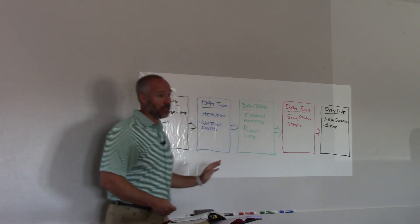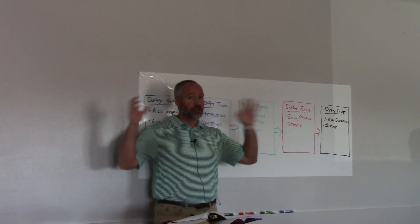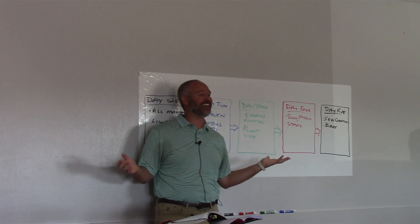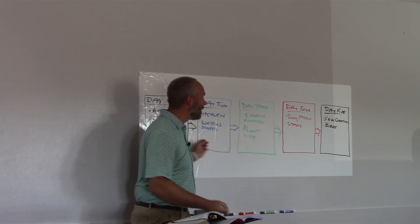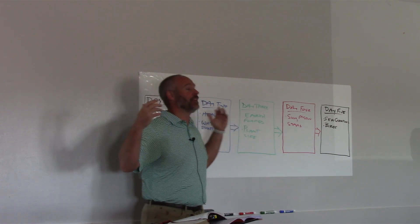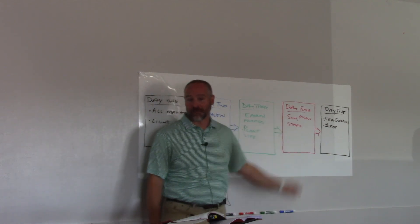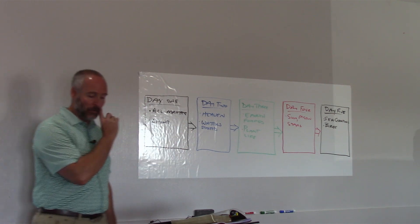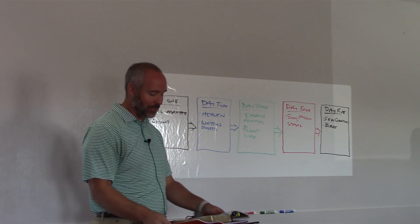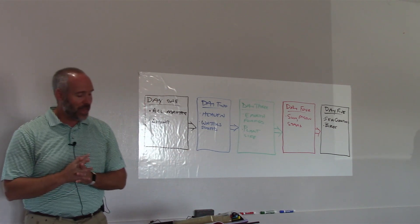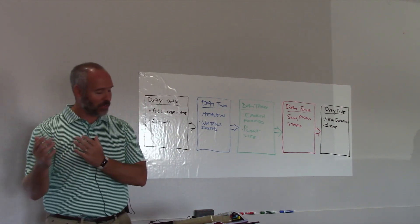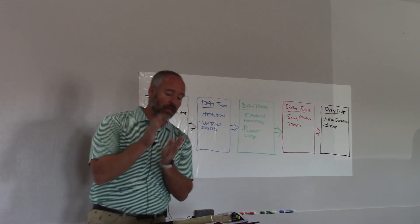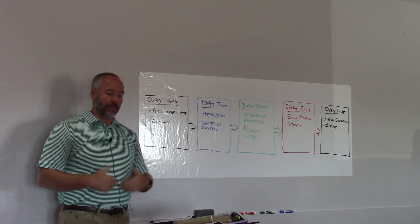Notice who is the most high-maintenance, who has the highest needs of all of God's creation - who's last? We are. We need a lot of stuff. We get bored, and we also get really hungry. So hopefully by the time day six comes around, we've got plenty of food. God said, 'Let the earth bring forth the living creature after his kind, cattle and creeping thing and beast of the earth after his kind, and it was so.' And God saw that it was good.